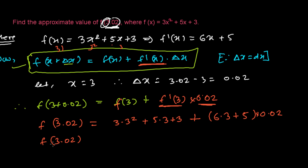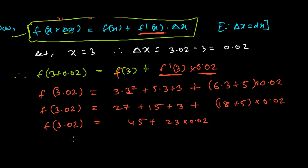So f(3.02) is going to be now: 3 times 9 (3² is 9), 9 times 3 is 27, and 5 times 3 is 15, and then this is 3. Now 6 times 3 is 18 plus 5 times 0.02. So f(3.02) is going to be: see, 27 plus 15 is 42, 42 plus 3 is 45. And here 18 plus 5 is 23 times 0.02. 23 times 2 is 46, so it's going to be 0.046. So it's 45 plus 0.46. Finally we get that f(3.02) = 45.46. This is our required answer.